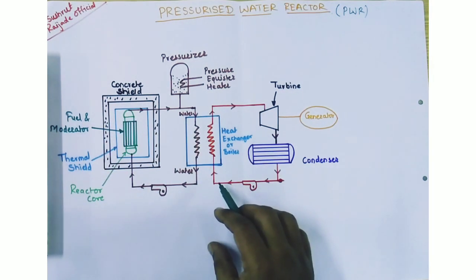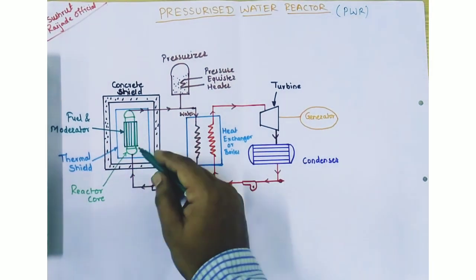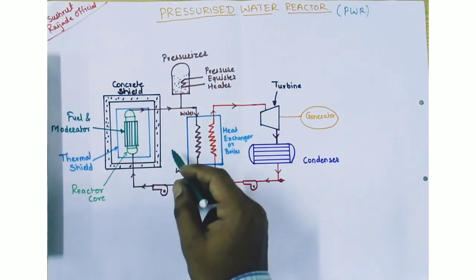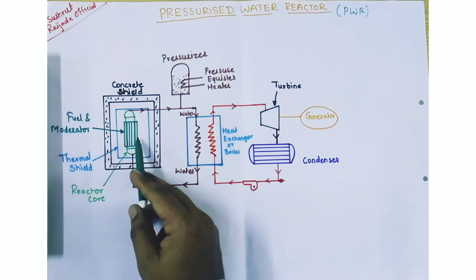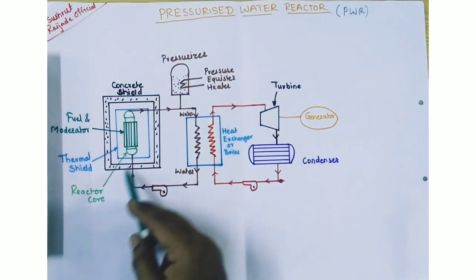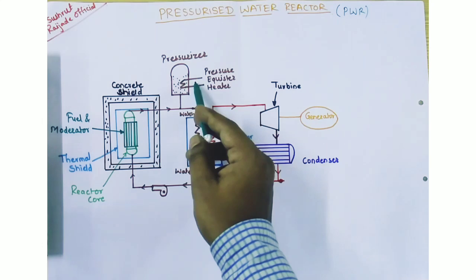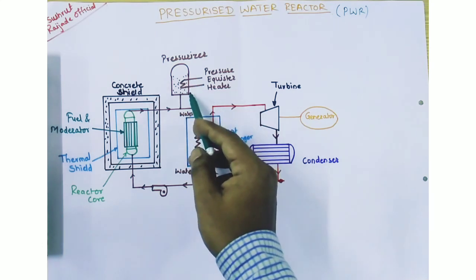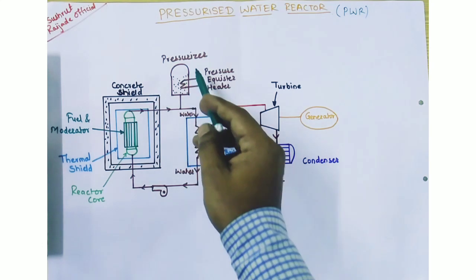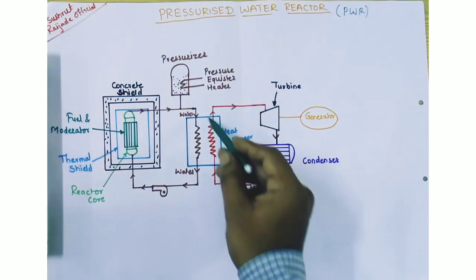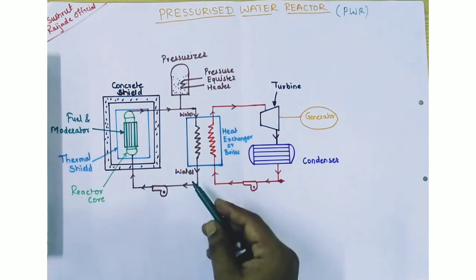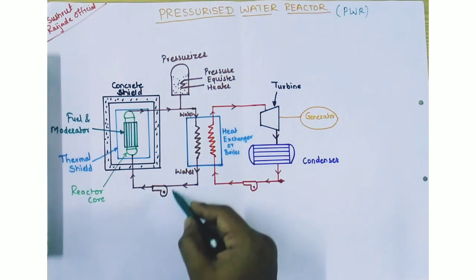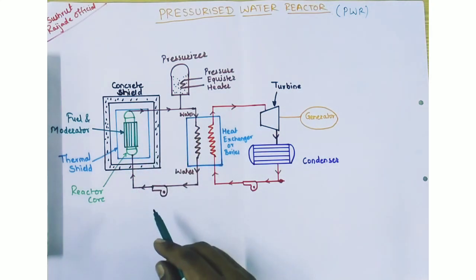The primary circuit consists mainly of a reactor which includes a concrete shield, fuel rod and moderator, thermal shield, reactor core, pressurizer, and a heat exchanger that works as a boiler. There is also a coolant pump that pumps the coolant towards the reactor core.